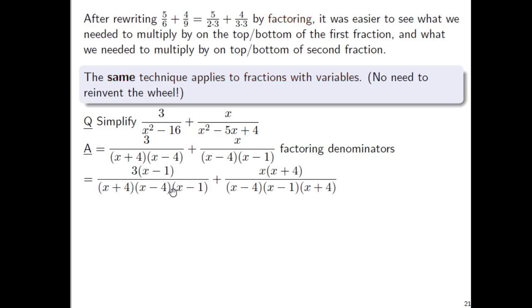So we multiply top and bottom of the first fraction by (x−1), and top and bottom of the second fraction by (x+4). Now both denominators have the same factors: (x+4), (x−4), and (x−1) — just in different order, but they're equal. The fractions now have a common denominator, and this process mirrors exactly what we did with the plain-number fractions above.